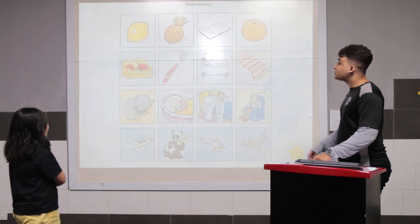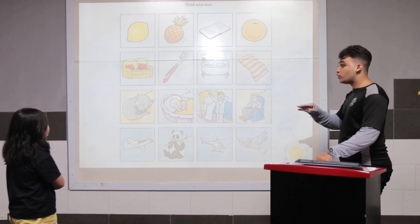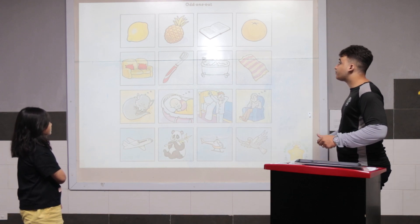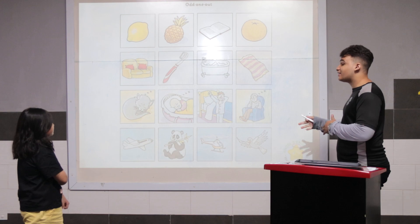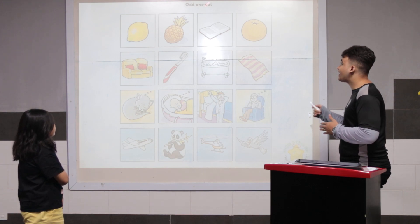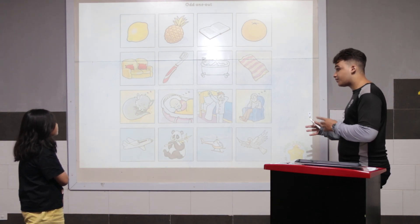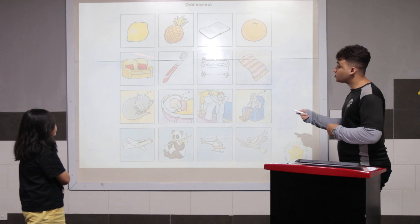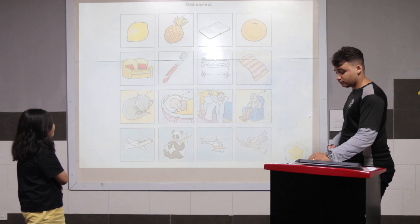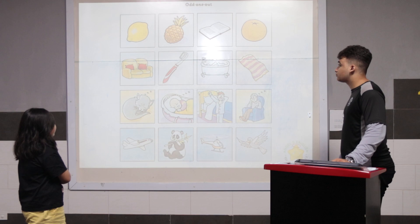Very good. I will explain the wrong one. You explain two, three, and four. In the wrong one, the book is different because the lemon, pineapple, and oranges are fruits. Can you explain two, three, and four for me?